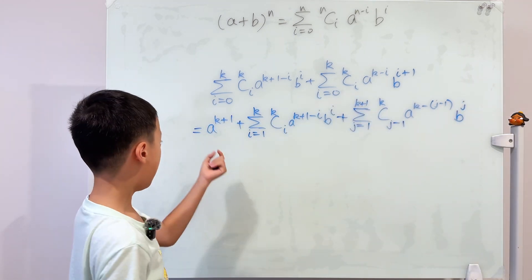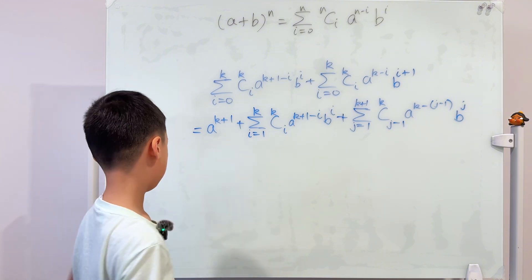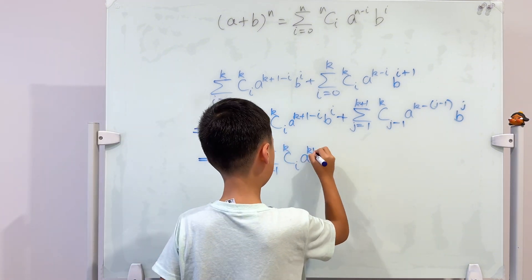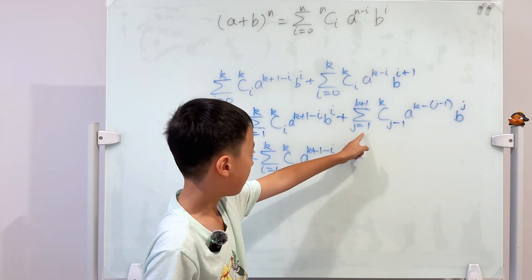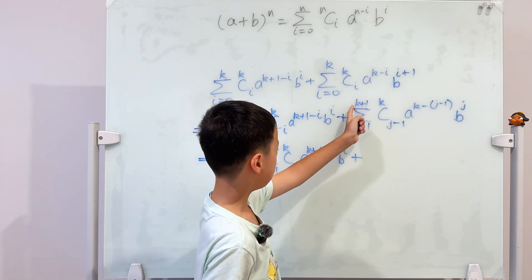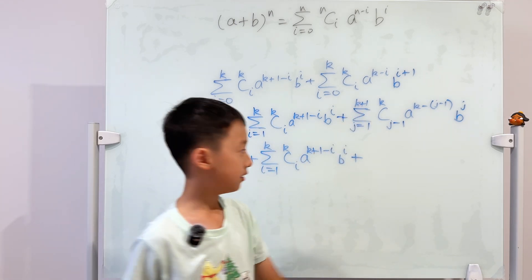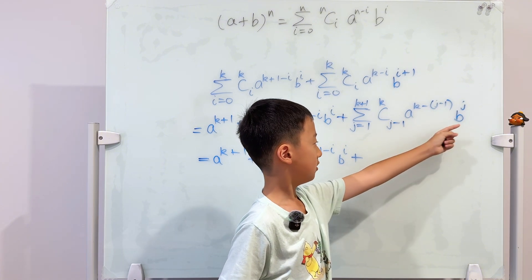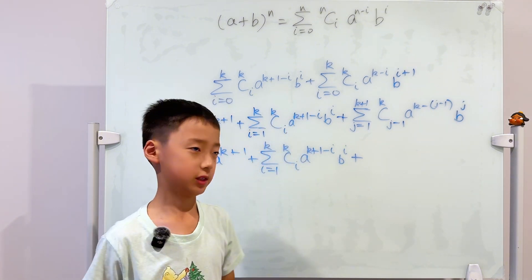So from here, I'm just going to copy these first two terms. From here I'm going to get the last term. So the last term is when j is equal to k plus one. And here, if j is k plus one, then this will be one, and this will be b to the power of k plus one.